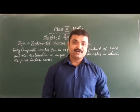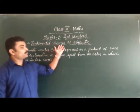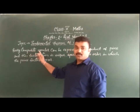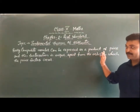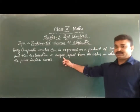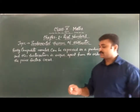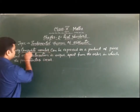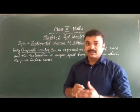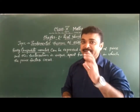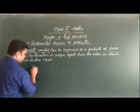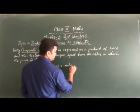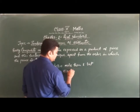Students, we are going to learn our next topic: the Fundamental Theorem of Arithmetic. This statement says every composite number can be expressed as a product of primes, and this factorization is unique apart from the order in which the factors occur. Every composite number — composite numbers are the numbers that are more than one but are not prime.